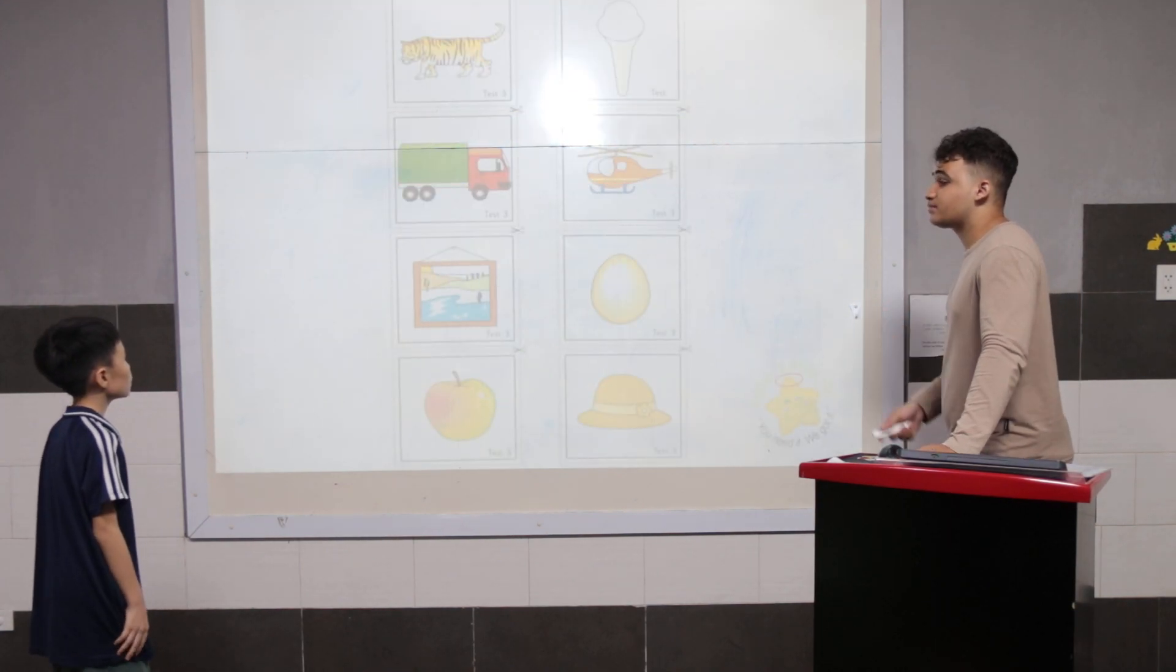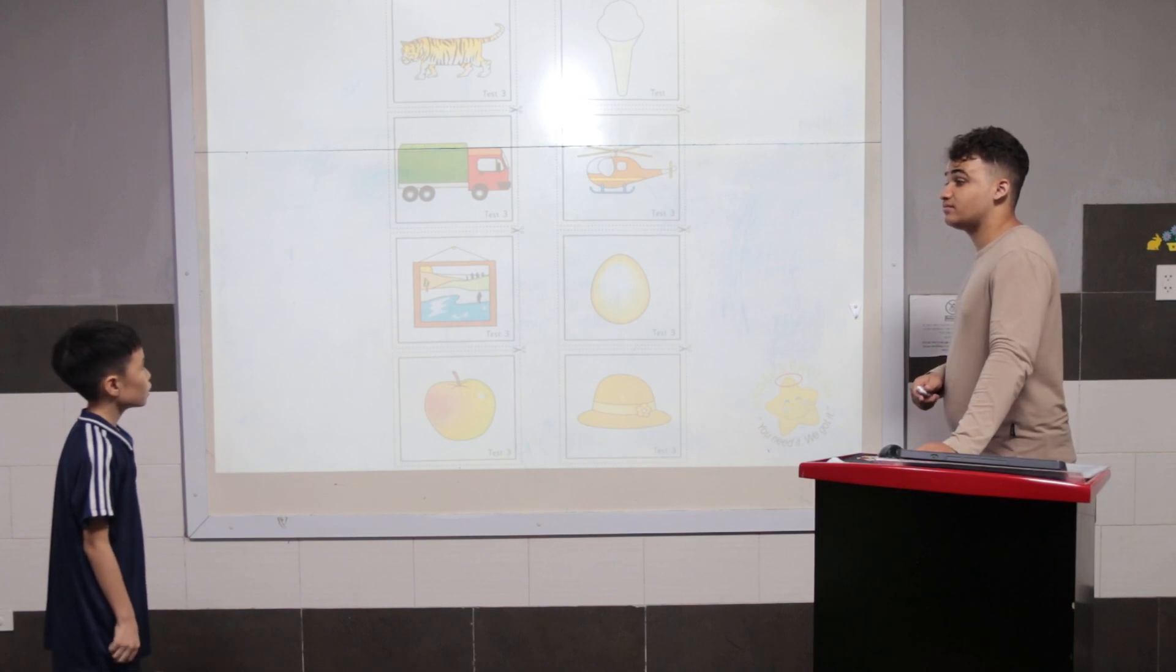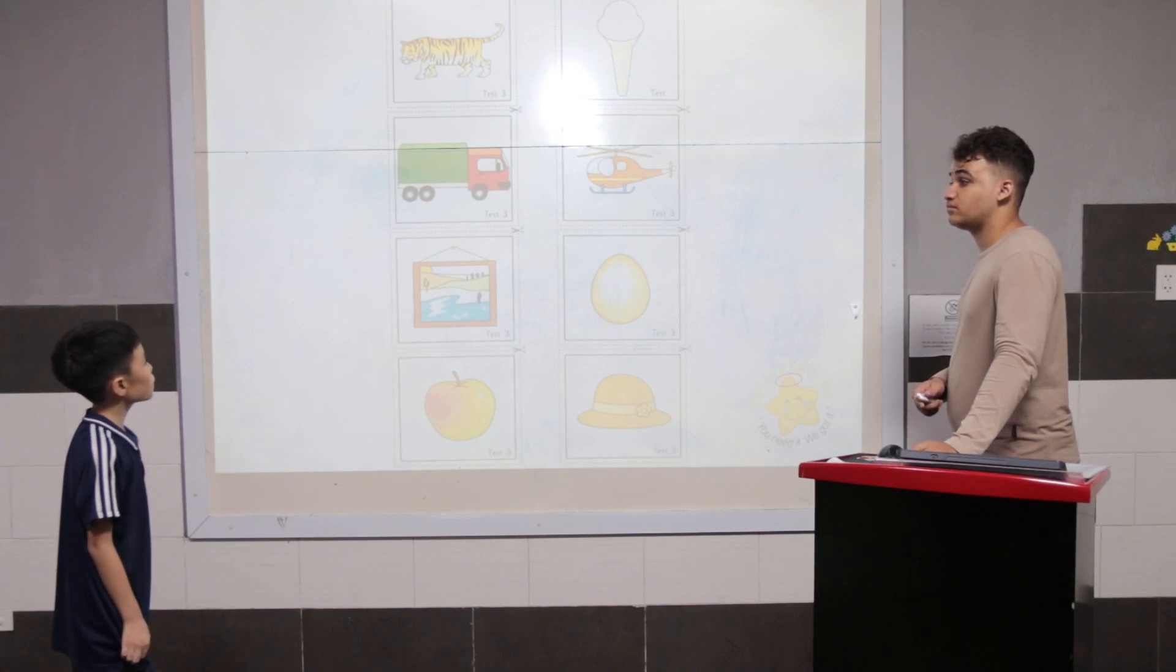What is it? It's a tiger. Excellent. What do tigers eat? It's meat. Good.